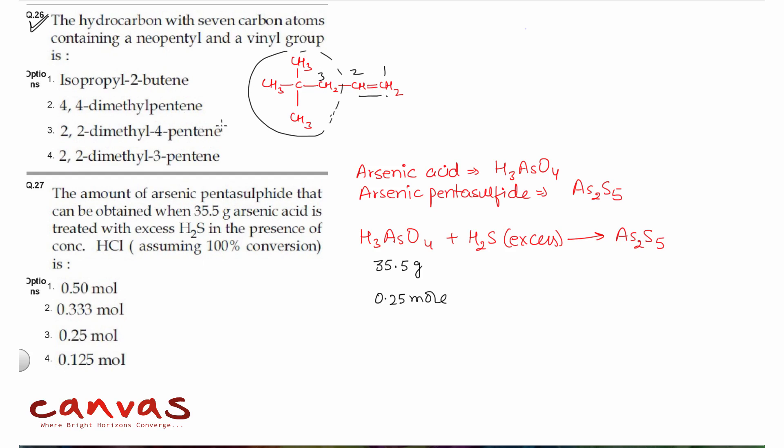Question number 27. The amount of arsenic pentasulfide that can be obtained when 35.5 grams of arsenic acid is treated with excess H2S.